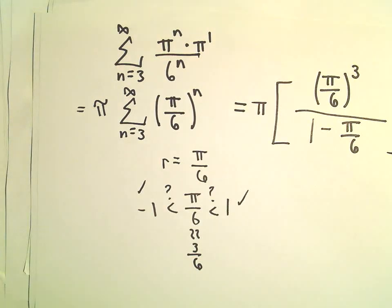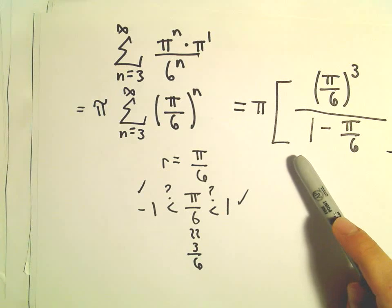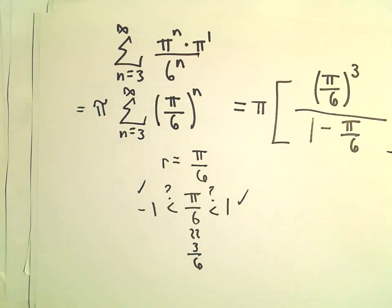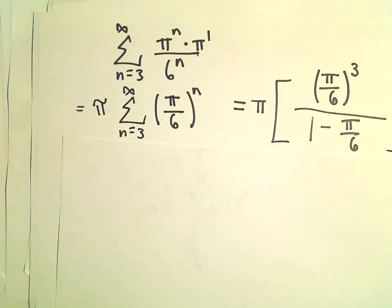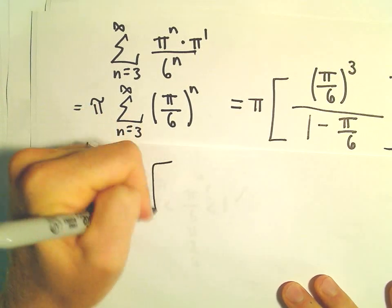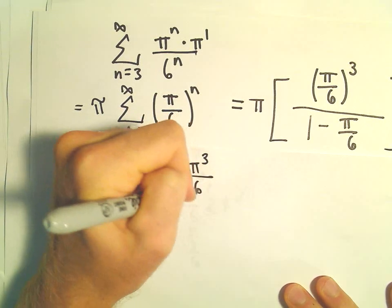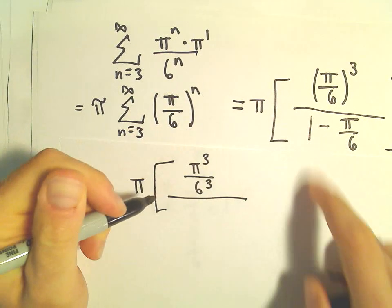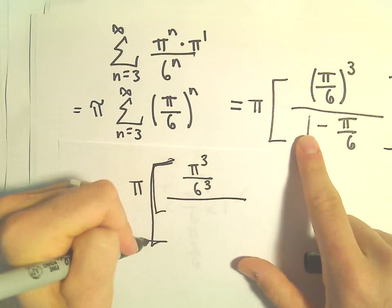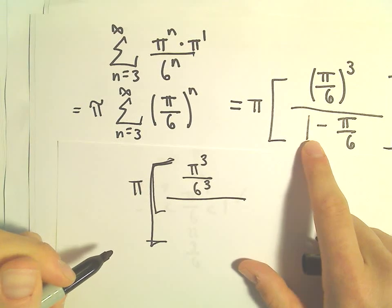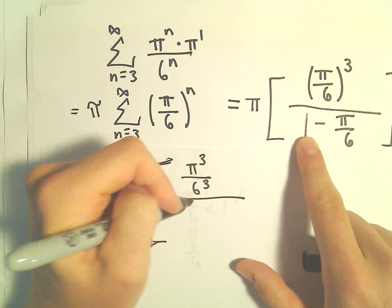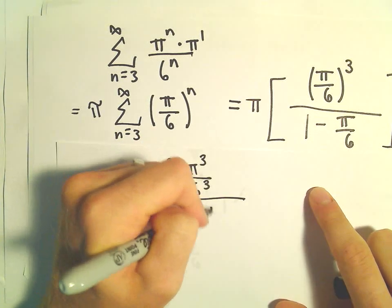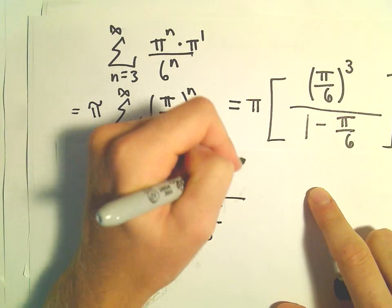You could certainly clean this up a little bit. But let's clean it up a little bit. Let's see what we can do here. So this is pi. I'm going to leave pi to the third over 6 to the third. We could get common denominators in the denominator.